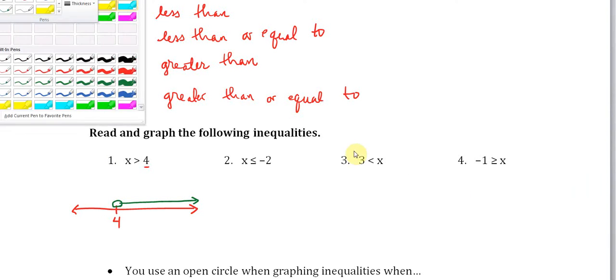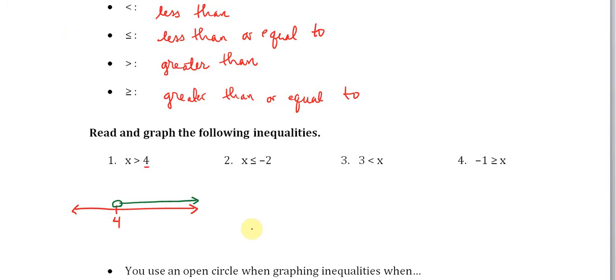Now we can have a case where the line is going to touch that number. In the second problem we have x is less than or equal to -2. I'll draw the number line and put -2 on there. This time it's all the numbers that are -2 and to the left of that, and we put in a filled in circle because of this equal sign. This green line represents all of the numbers that are less than -2 or equal to -2. I'm going to leave numbers 3 and 4 for you to do as an exercise.